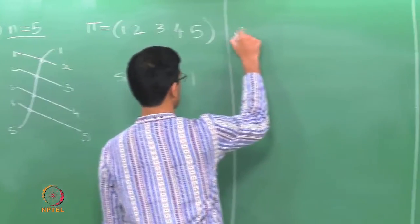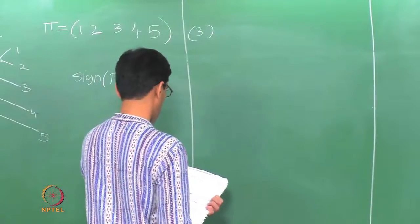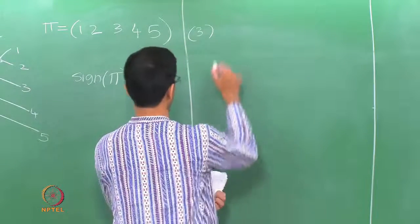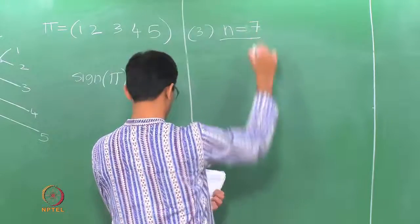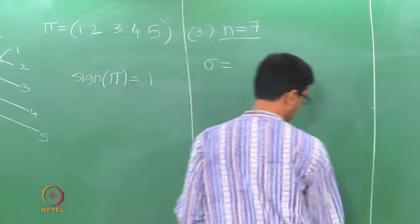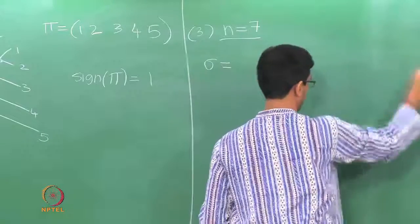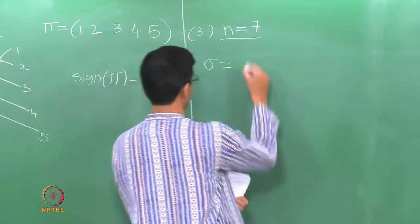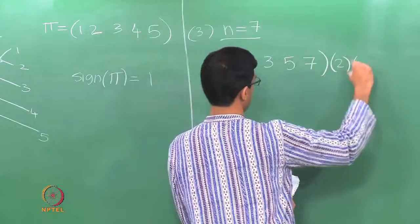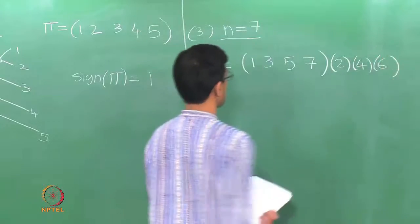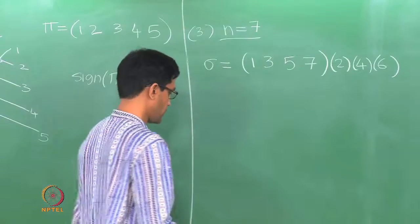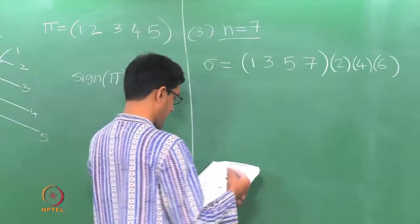Here is a slightly more general example. We will look at a 4-cycle but with n equals 7. Take sigma to be the 4-cycle on 1, 3, 5, 7, leaving the remaining numbers 2, 4, 6 unchanged. This is sigma written in cycle notation. Let us draw the tangle diagram for this permutation.